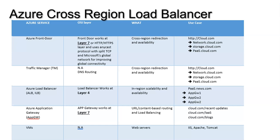If you take Azure Front Door, it works at layer 7 — which is HTTP and HTTPS — by splitting the TCP connection and using Microsoft's global network for improving global connectivity. Whereas Traffic Manager works at the DNS level with DNS routing. Then Azure Load Balancer works at layer 4, which is the TCP/IP protocol. Application Gateway, once again, works at layer 7.